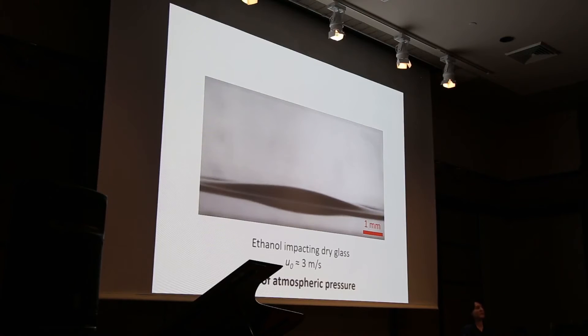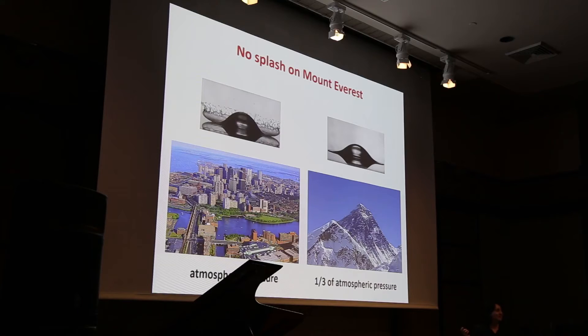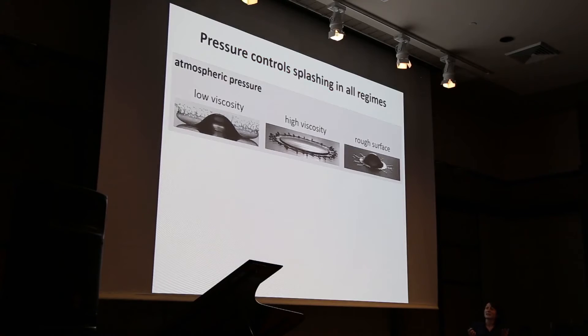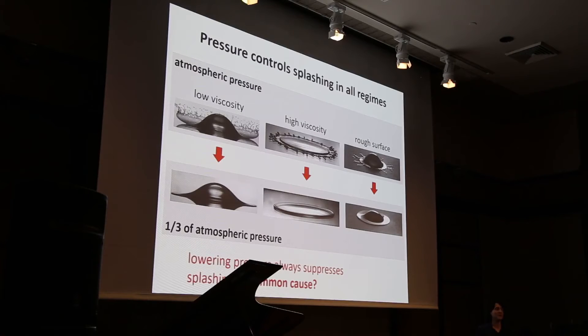Seeing this really blew us away. This shouldn't have happened. What it really tells us is that a drop that splashes in Boston is not going to splash on top of Mount Everest. To me, this is still one of the craziest things I've ever heard. It tells us that the air — something we would never have expected — is actually a really important control parameter for these splashes. This is a very robust effect. I've introduced splashes of low viscosity, high viscosity, smooth surfaces, rough surfaces — but as different as these splashes look, they have one thing in common: as I lower the pressure, the splash disappears.